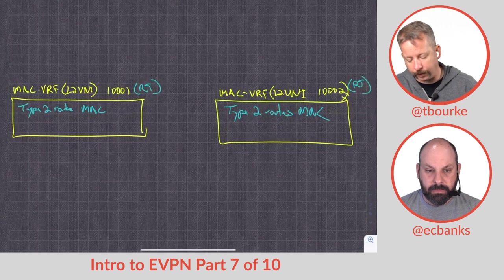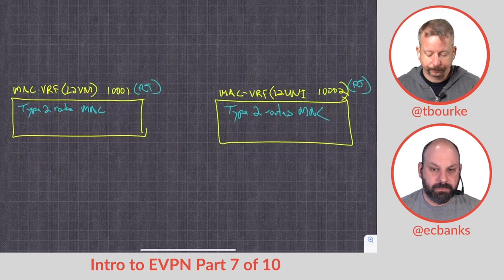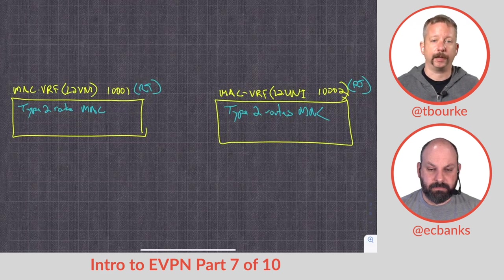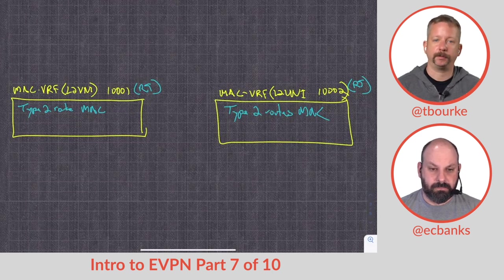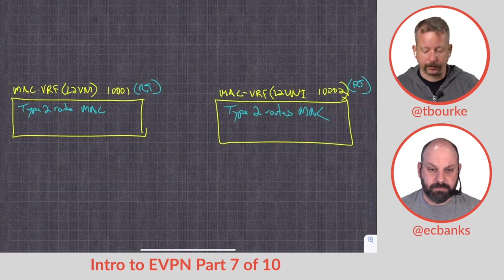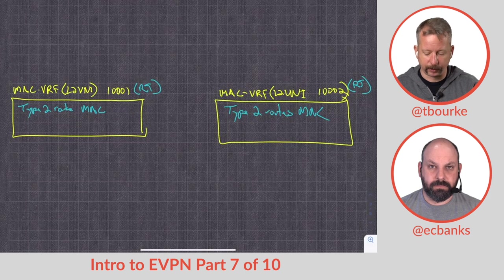Right, we're going to have a unique route target to each of these. So when I create a route, I'm going to throw that route target on it. It's going to go into BGP to get the route to the other leafs. And that other leaf is going to take that route target, map it, look it up in its configuration, and see, okay, we're going to go to this layer two VNI.